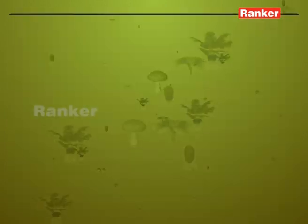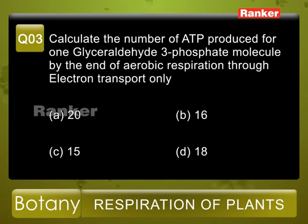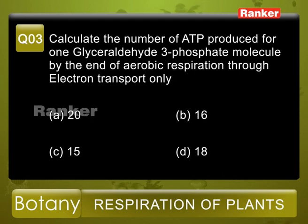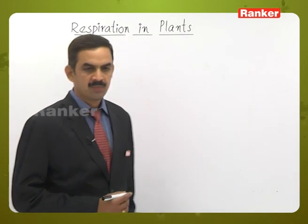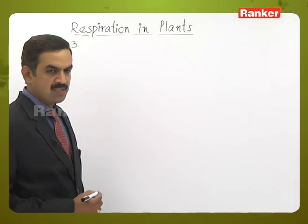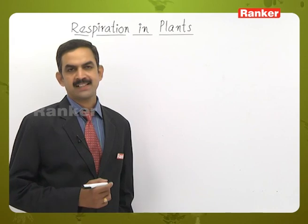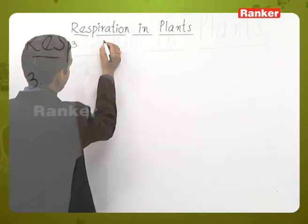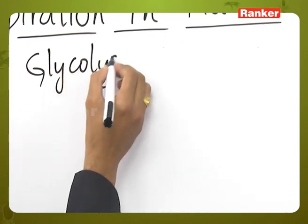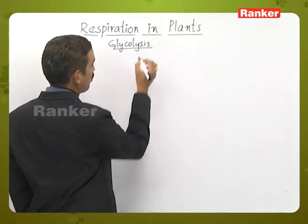Question number three: calculate the number of ATP produced for one glyceraldehyde-3-phosphate molecule by the end of aerobic respiration through electron transport only. Options: A) 20, B) 16, C) 15, D) 18. Glyceraldehyde-3-phosphate is an intermediate compound formed in the glycolysis process.